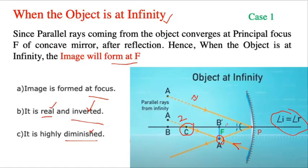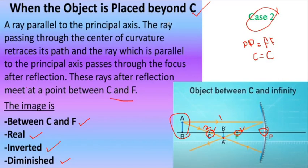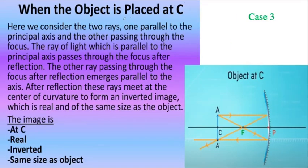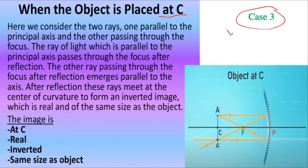So, case 1: when the object is at infinity. Case 2: when the object is placed beyond C. Now case 3: when the object is placed at C. We have our object here. The first ray we take is parallel to the principal axis — same rule — a ray parallel to the principal axis passes through the principal focus after reflection.